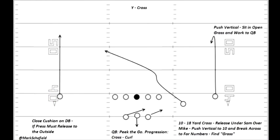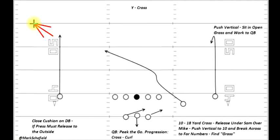Working from left to right, we'll start with that X receiver on this side of the field. He's going to run a go route. The X receiver must close the cushion on the defensive back as soon as he can — that's his first responsibility. Whether the defensive back is in off man or press coverage, he needs to erase that cushion first. If the quarterback is in press coverage, he needs to bend this to the outside, to draw the corner that way, because that will give the quarterback a better throwing window on the go route and also pull that cornerback away from the primary target of the play, which is that crossing route.